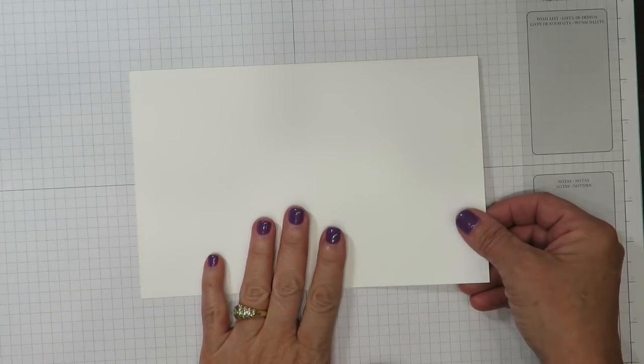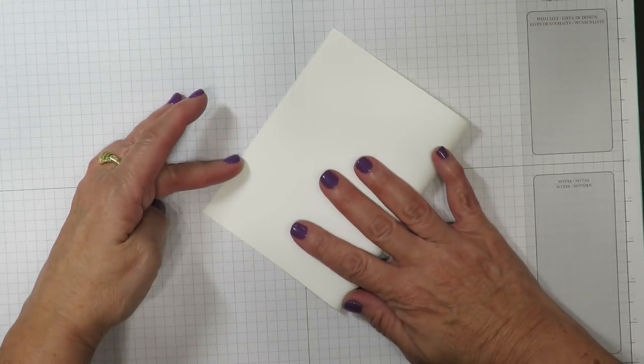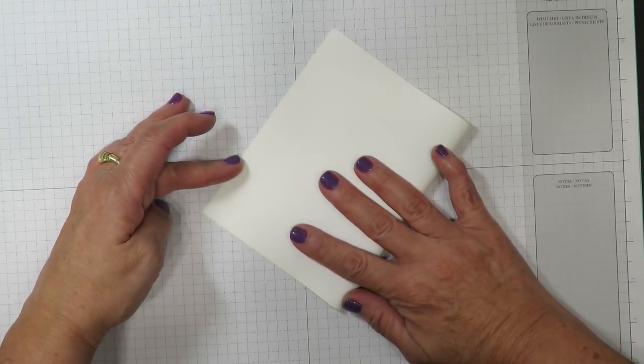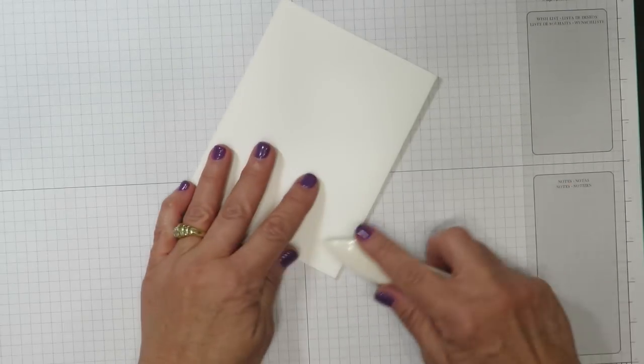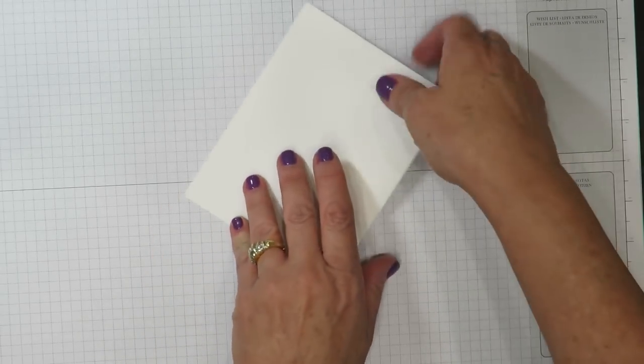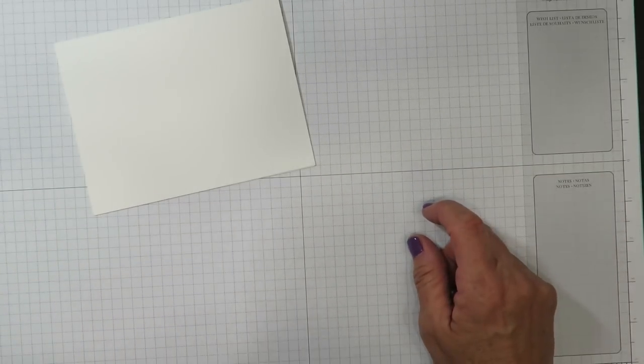I'm starting with the base of Whisper White cardstock that I'm going to fold in half. This is where we're going to place that designer series paper that's going to be in the overlay for the top. I'm going to use my bone folder for a nice crisp crease on that card and set that aside for now.